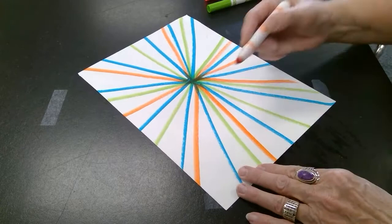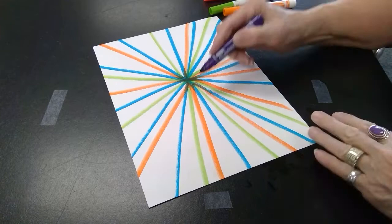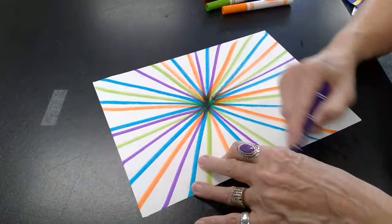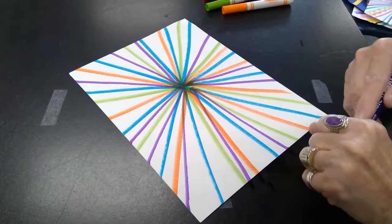I'm tilting my marker a little bit to an angle so it's kind of on its side, so it makes a little bit wider line. Add some purple. How about some bright pink.